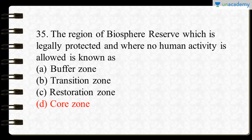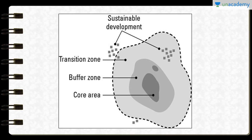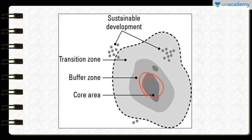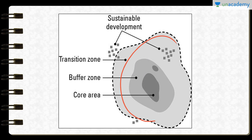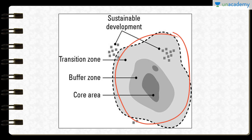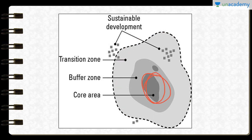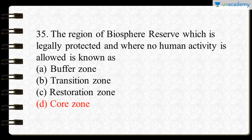The next question asks about the region of a biosphere reserve that is legally protected where no human activity is allowed. Biosphere reserves have three zones: the core zone with no human interference, the buffer zone with limited human activity, and the transition zone where human settlement, grazing, and cultivation are allowed. Since no human activity is allowed in the core zone, option D is the correct answer.